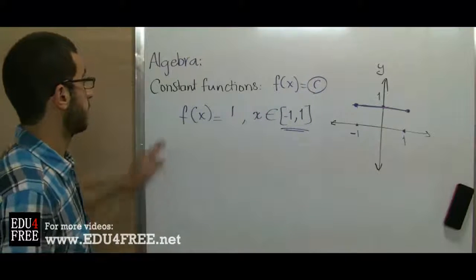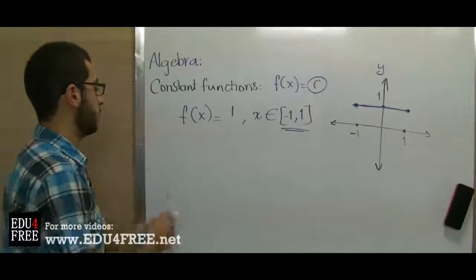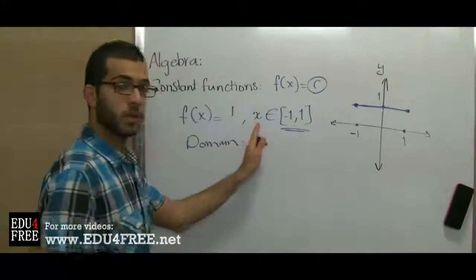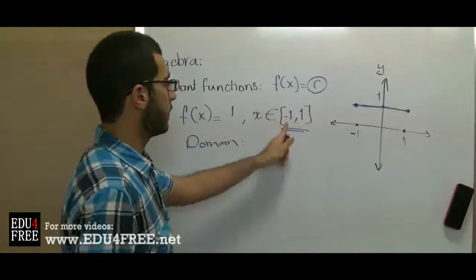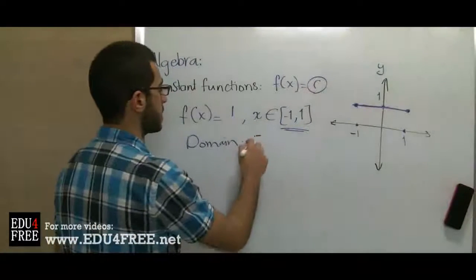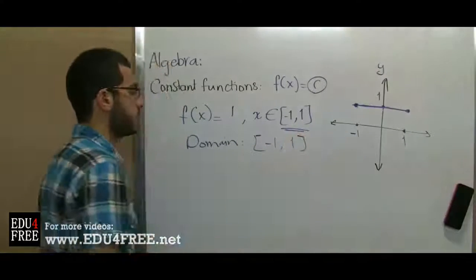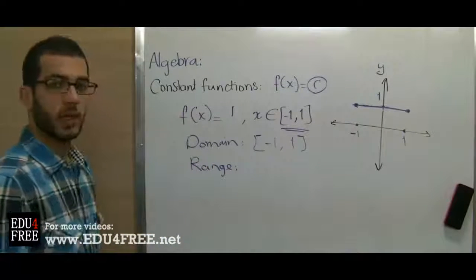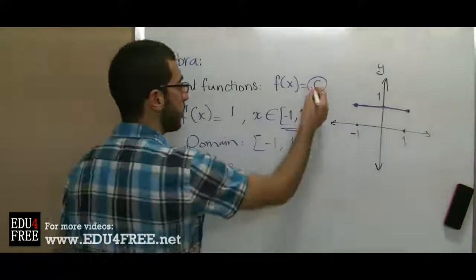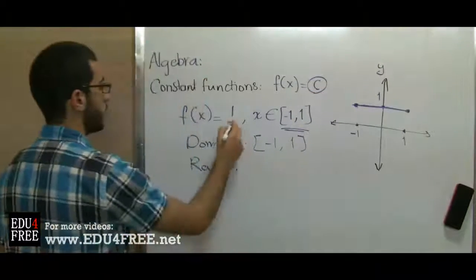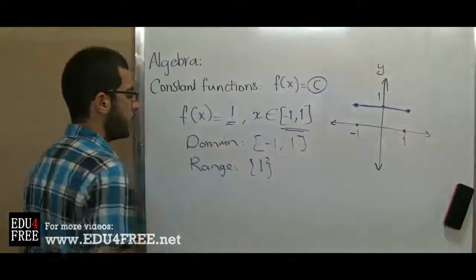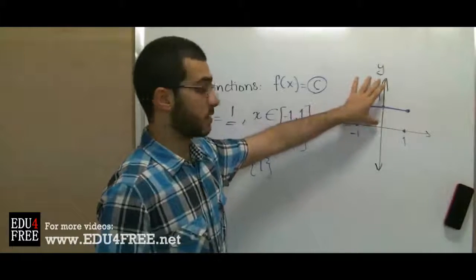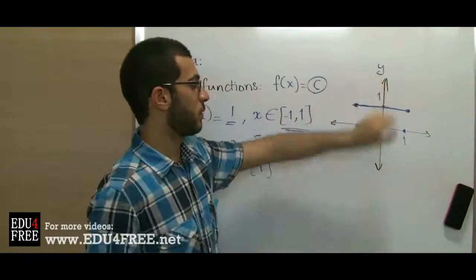Now we need to know some facts about constant functions. First, the domain: the domain is the interval to which x belongs. Here x belongs to [-1, 1], a closed interval, so the domain is [-1, 1]. Second, the range: the range of a constant function is always the single point c, because the range is the part consumed from the y-axis.